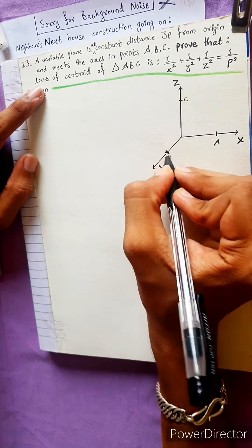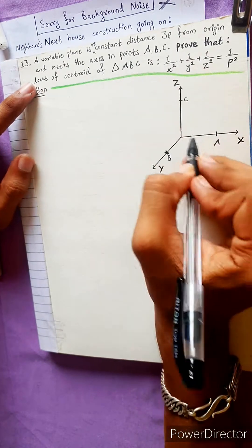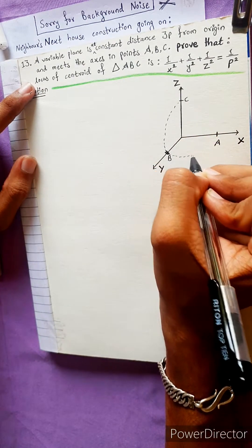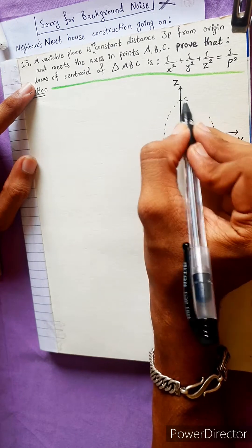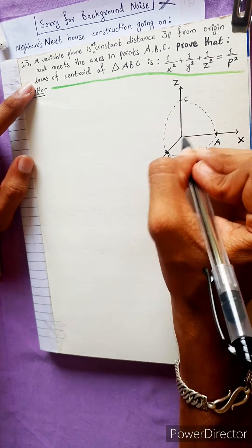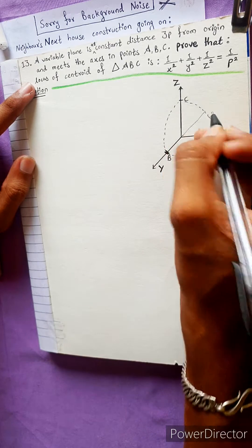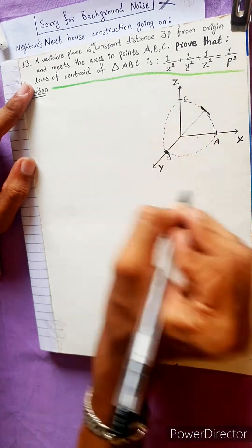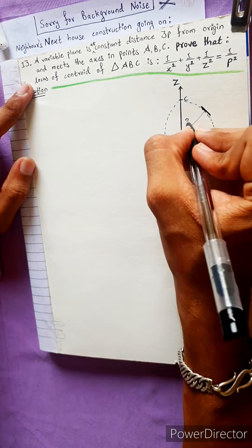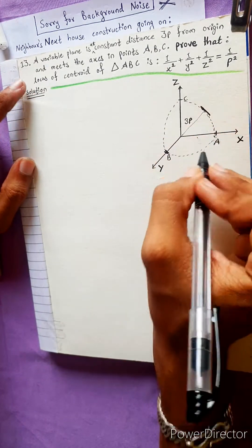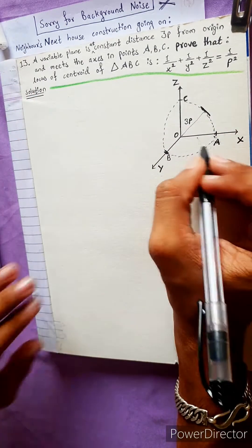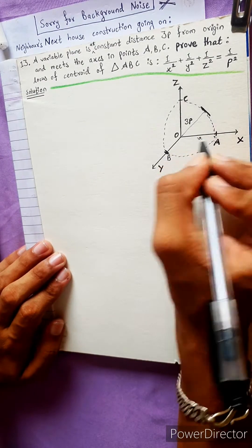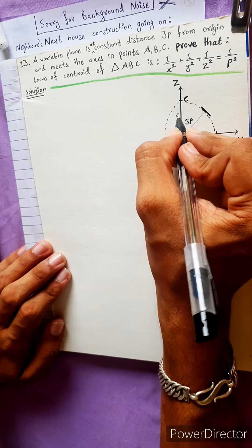The plane is at constant distance 3P from the origin. Since the plane is variable — it is moving — the intercepts A, B, and C are also moving as the plane changes.